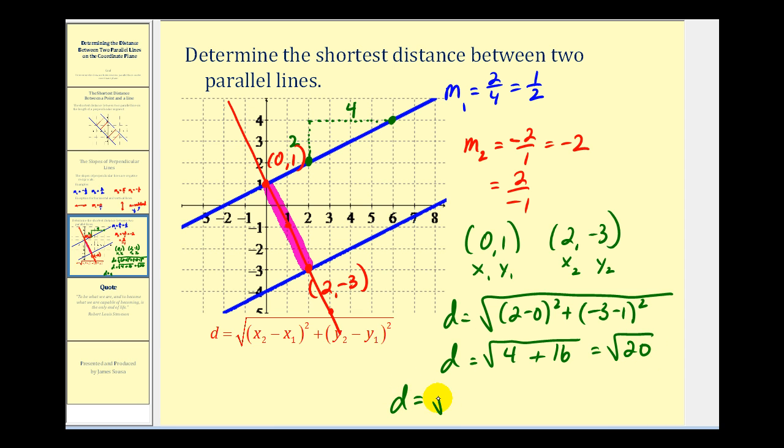Remember the square root of twenty can be simplified. Twenty is two times two times five. So we have a perfect square factor here. So the distance is equal to two square root five, which would be approximately four point four seven two.